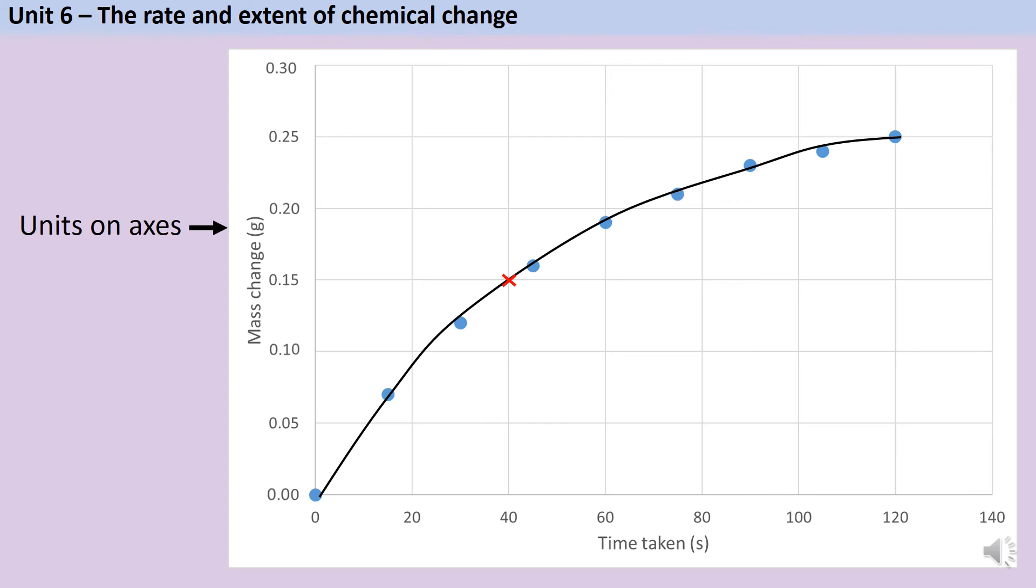I can also use the graph to work out what the rate of reaction will be, either over the course of the whole reaction as an average or at a specific point. If I want to know what the mean rate of reaction is, I need to do the mass change divided by the time, and this is for the whole of the reaction. So here I would do 0.25 grams divided by 120 seconds. This would give me a rate of 0.0021 grams per second.